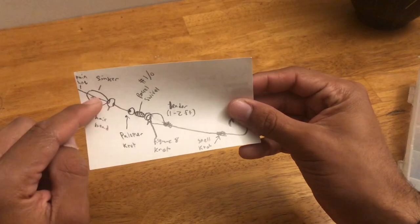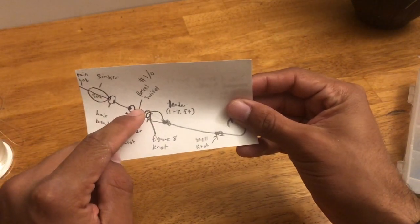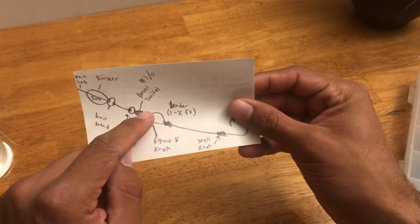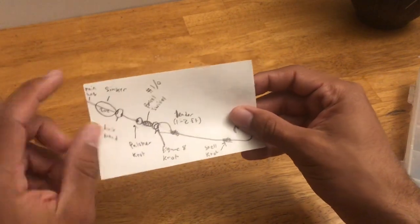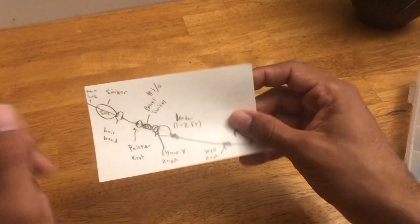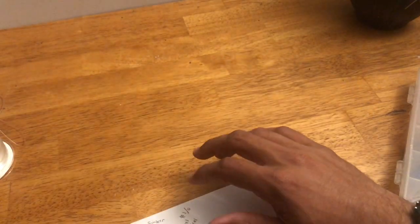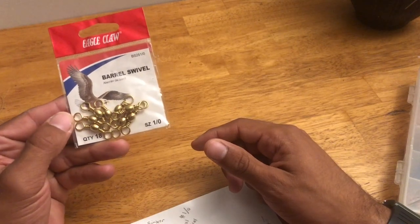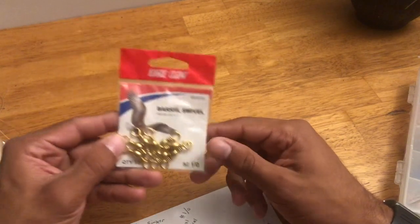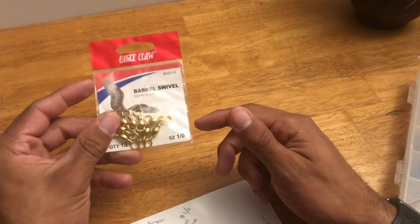So you have your main line and then you have a swivel. Depending on what size of fish you're going for, these swivels can be really any size you want. You could even use one of those clip swivels and make your life a little bit easier. I like to use for general purposes an eco-claw size 1-0 or size 1.